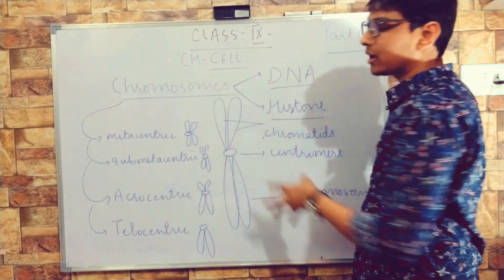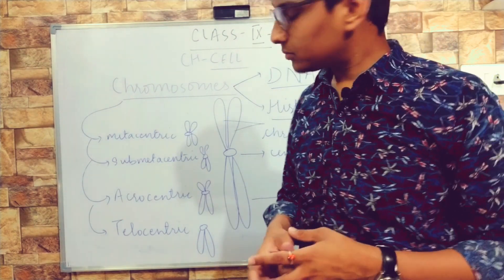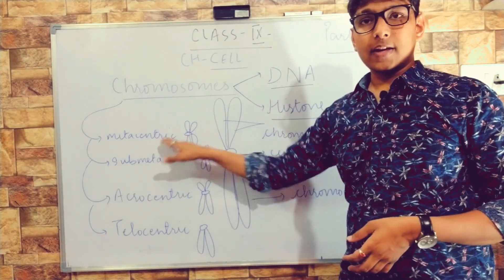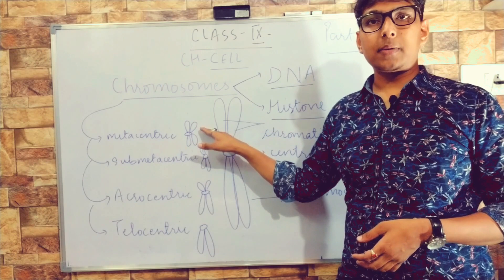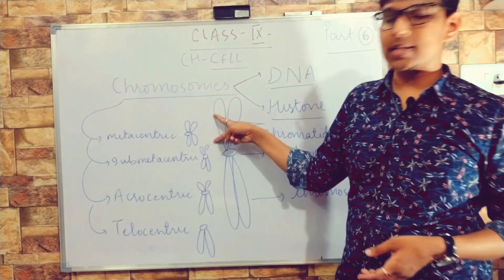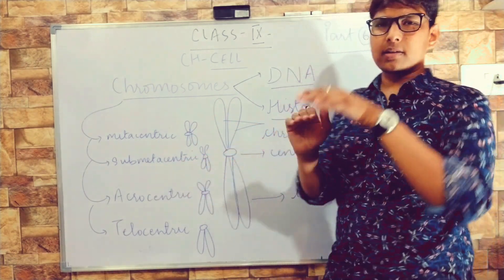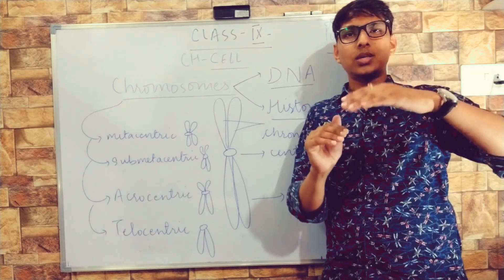These chromatids are equal in size. Metacentric: the centromere is situated in the middle and both chromatids are of equal size. In sub-metacentric, the centromere is shifted towards one side a little bit, so one arm becomes a little smaller than the other.